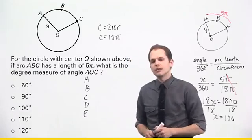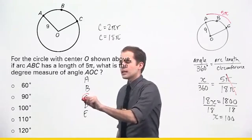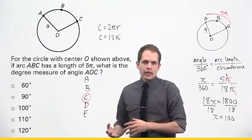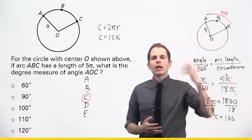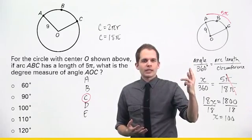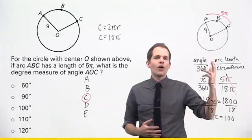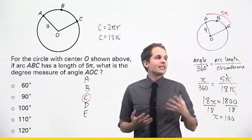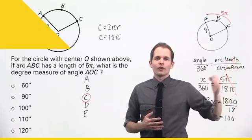That's the missing angle. So the correct answer to this question is C. So when you're being asked about arc length or sector area or central angles, just remember the proportion. The central angle over 360 is the same as arc length over circumference. That is the same thing as sector area over the total area.